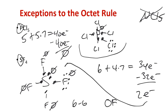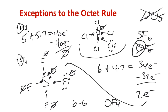You can also form SF6 but not OF6. We won't generally expand octets for stable molecules with central atoms in the second row of the periodic table.